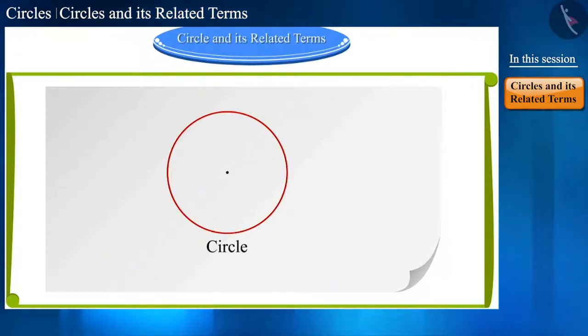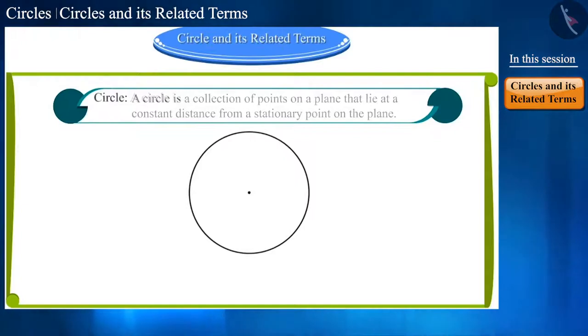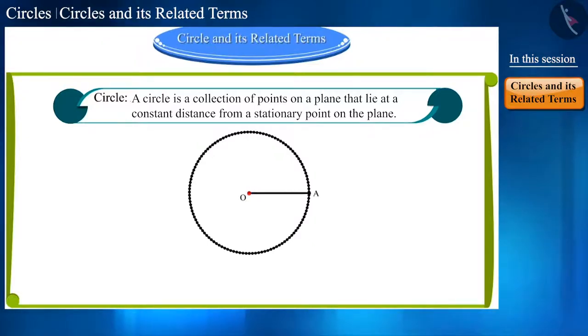Based on its design, we can define the circle thus: a circle is a group of points on a plane that lie at a constant distance from a stationary point on the plane. We call the stationary point the center of the circle. Point O is the center of the circle, and we call this constant distance the radius of the circle. Line segment OA is the radius of the circle.